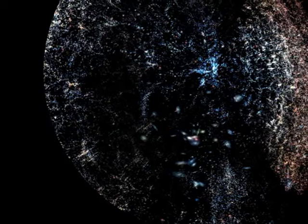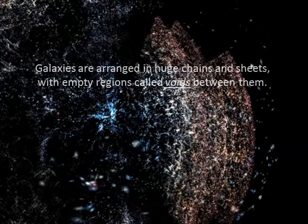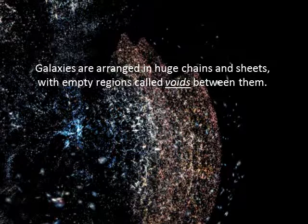Measurements have been made for millions of distant galaxies. The Sloan Digital Sky Survey has created detailed three-dimensional maps of the universe with images of one-third of the sky and spectra for more than three million astronomical objects. The maps show that galaxies are not scattered randomly through space, but are instead arranged in huge chains and sheets that span many millions of light years.